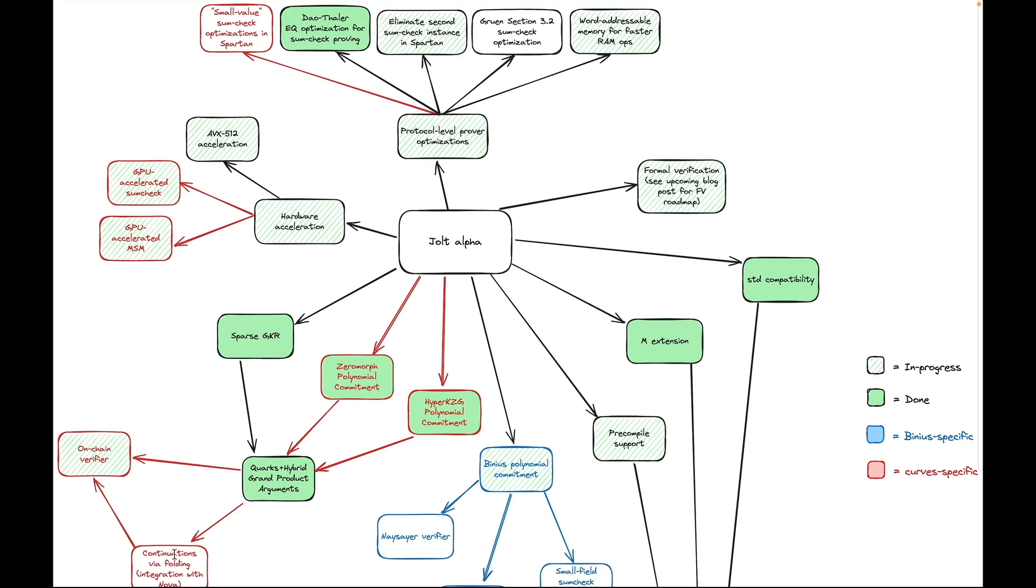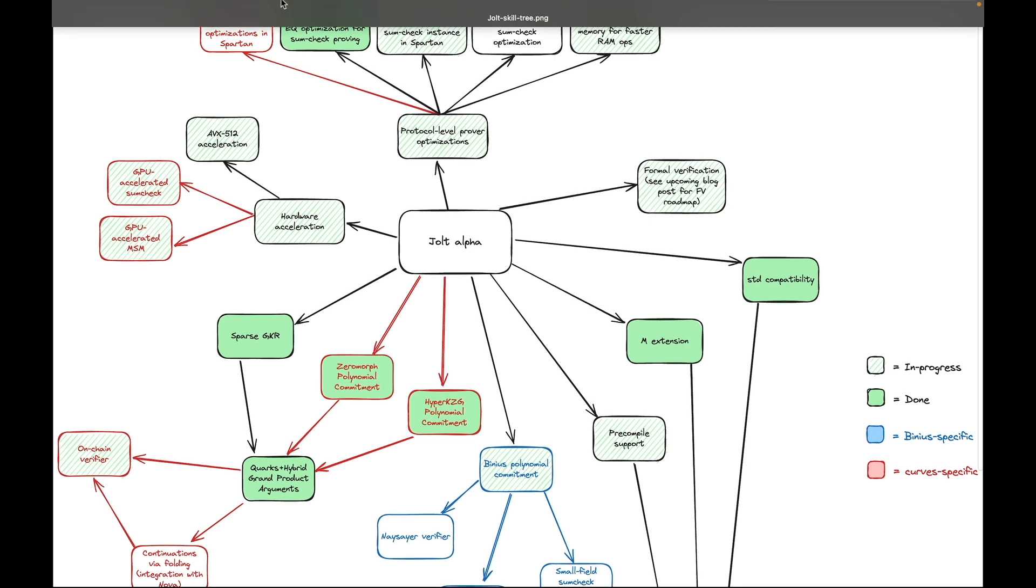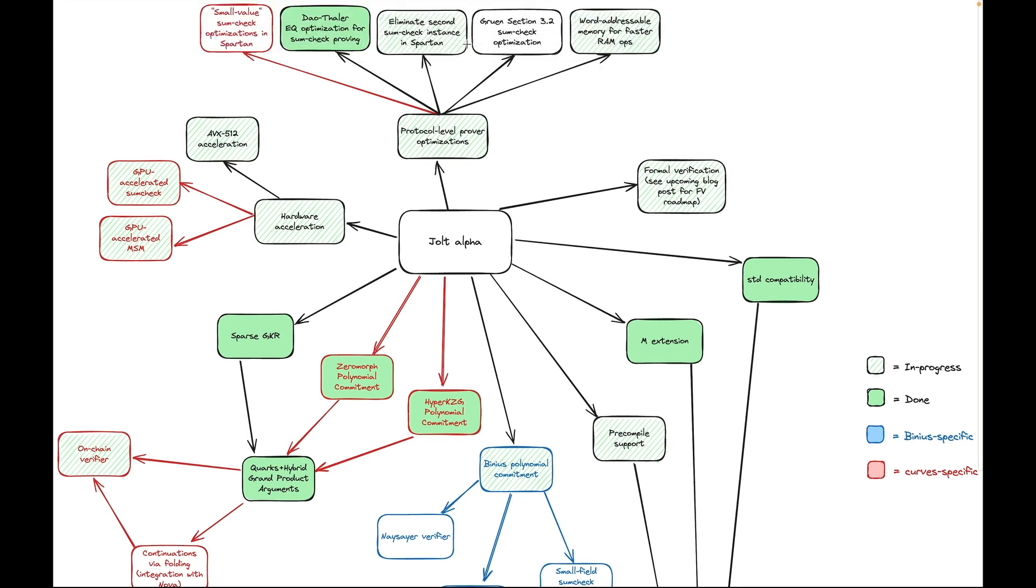Once all of that is done—continuations, out of space control for the prover via folding, GPU acceleration, precompile support, getting implemented our known prover speed ups—we hope that Jolt will be the only ZKVM suitable for proving in resource-limited environments with two to four gigabytes of space or less while simultaneously achieving state-of-the-art proving speed.